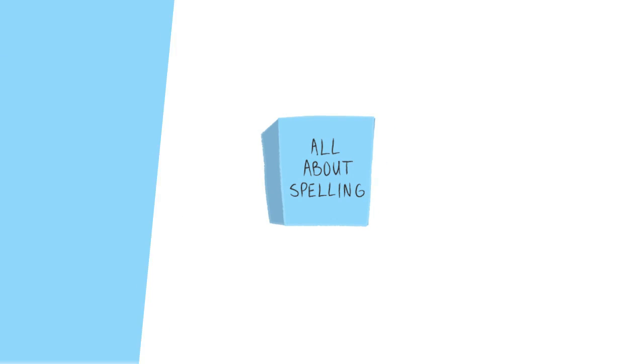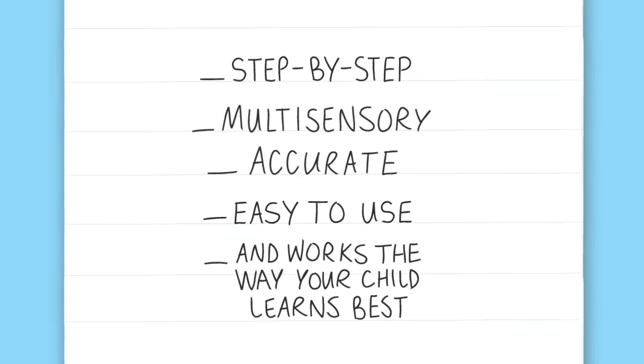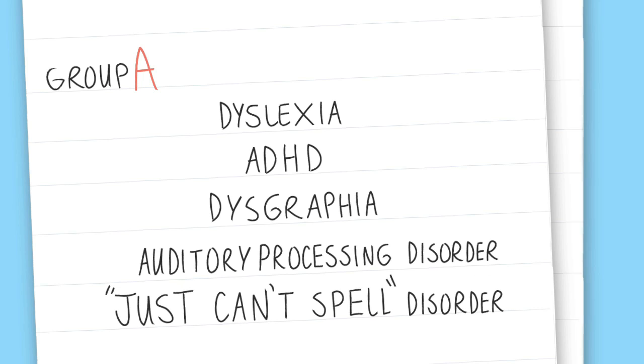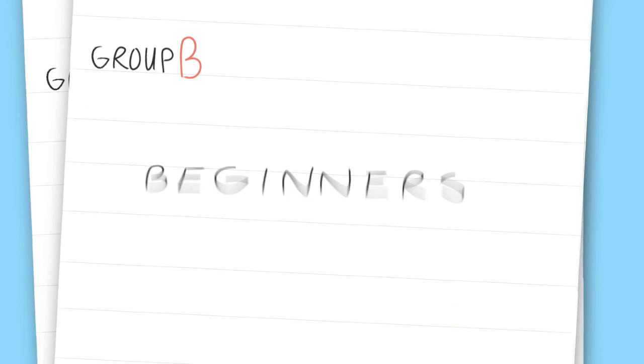Because All About Spelling teaches children the way they learn best, in a simple-to-use and thorough way, it is perfect for two groups of kids. It resolves the struggle that older kids have with spelling for whatever reason, and it is perfect for young kids just starting to spell.